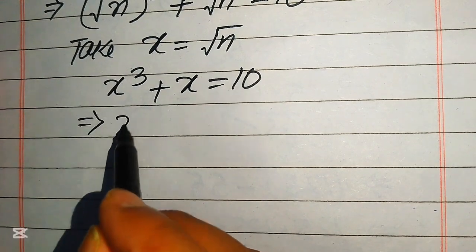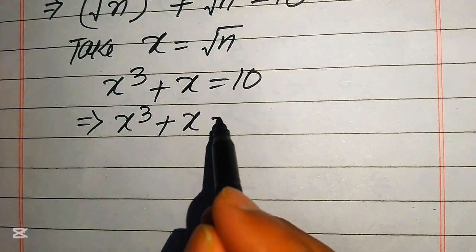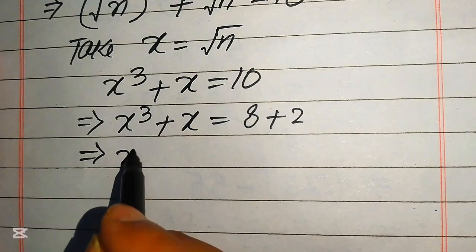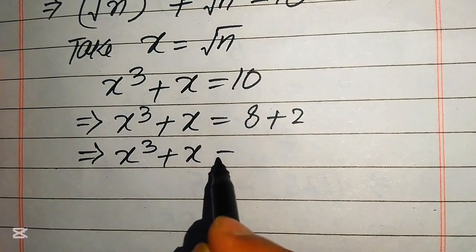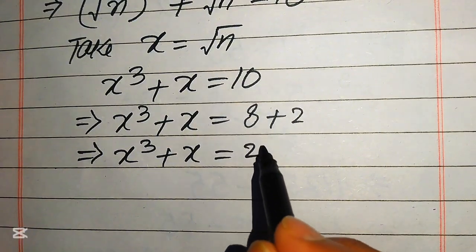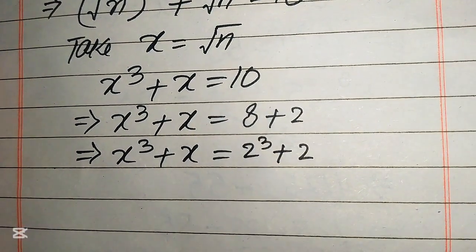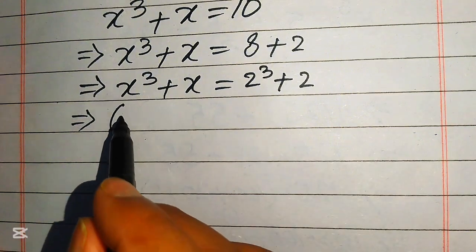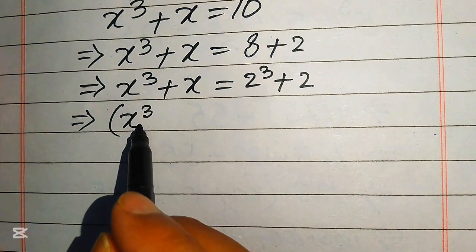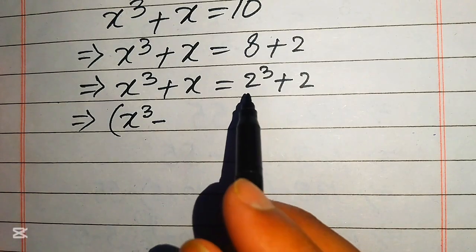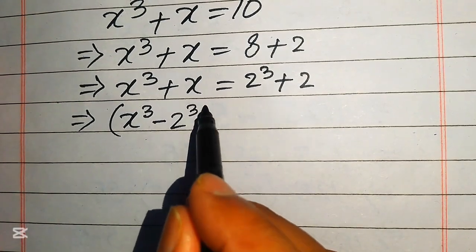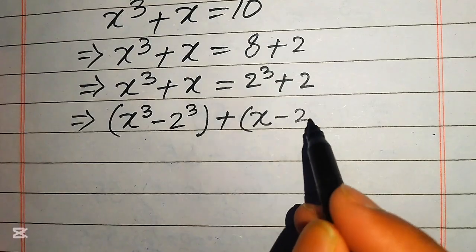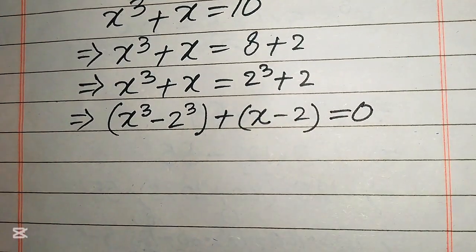For this, we rewrite the right-hand side by breaking 10 as 8 plus 2. We know that 8 plus 2 equals 10. So on the left-hand side we have x cubed plus x, and on the right-hand side we write 8 as 2 cubed plus 2. In the next step, we move 2 cubed to the left-hand side, so it becomes minus 2 cubed, and this whole equation equals 0.